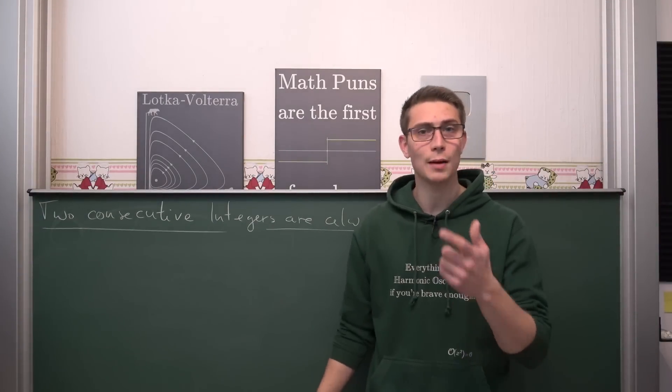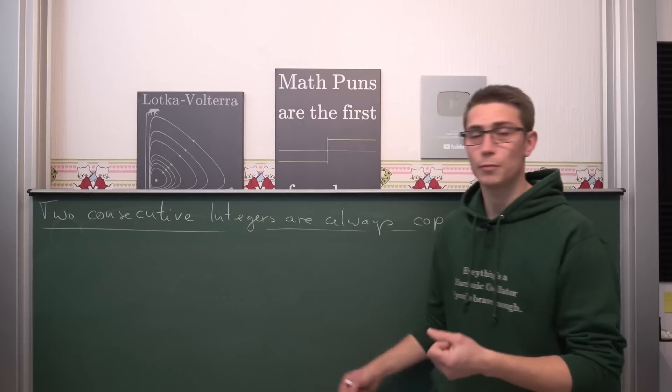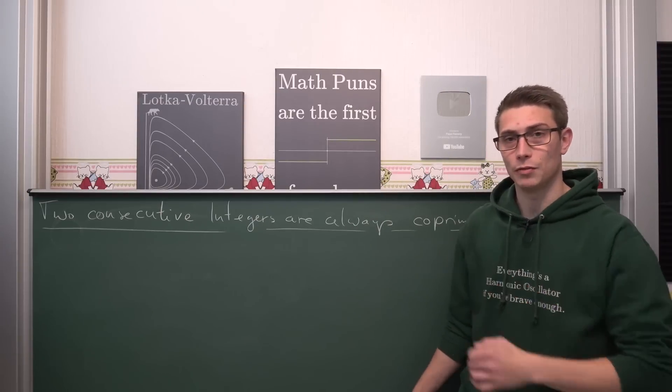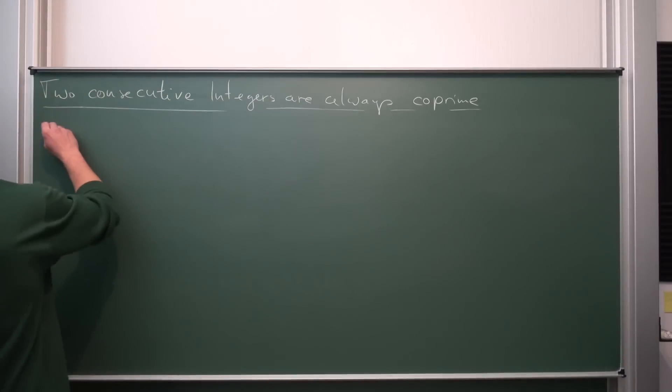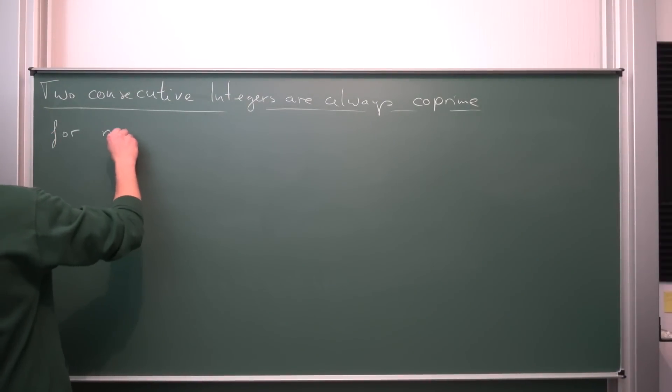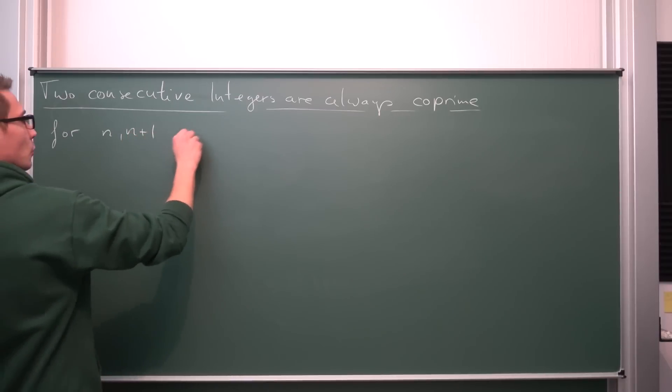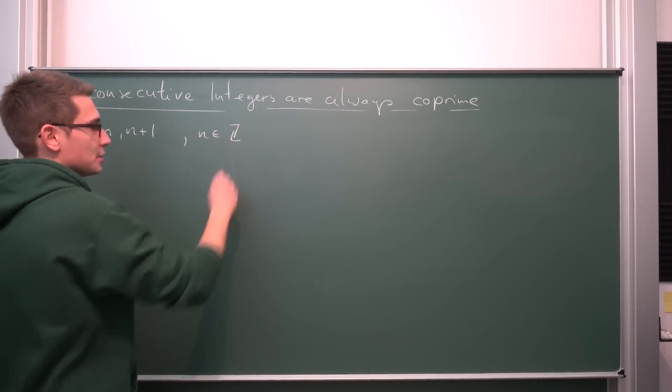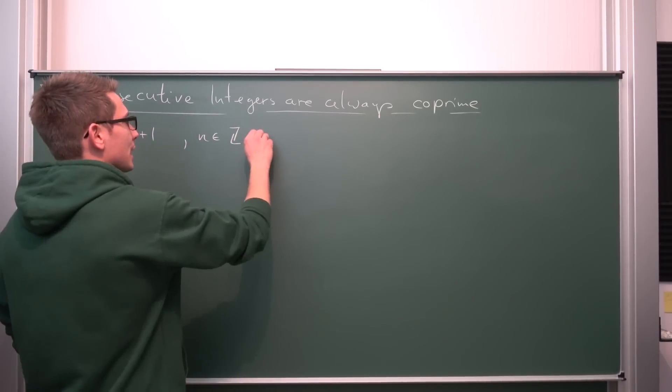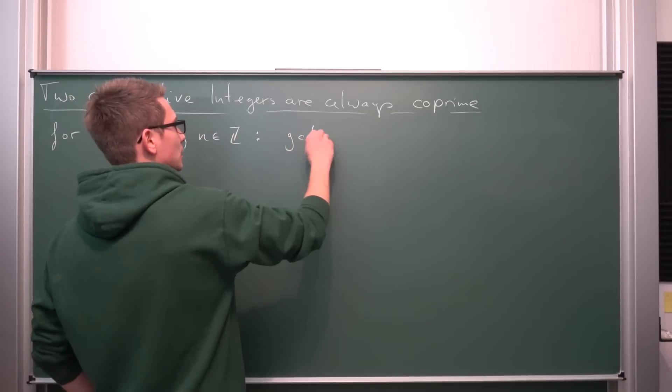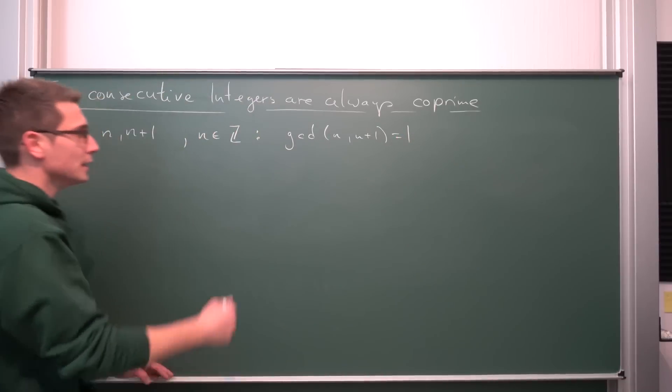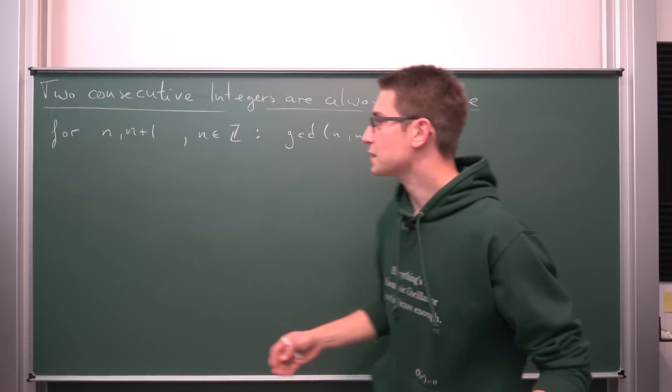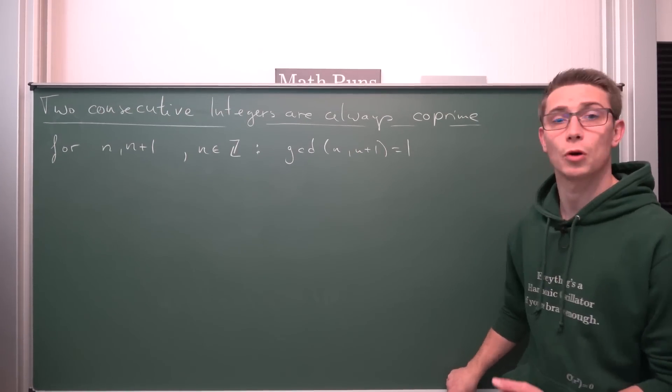When are two numbers co-prime or relatively prime? Well, if their greatest common divisor is equal to 1, obviously. Meaning, if we have two numbers, so for n and n plus 1 with n element of the positive and negative integers, we have that the GCD of those two, n and n plus 1, is equal to 1. This is what our statement up here states and we want to prove it. And now here for the first approach.